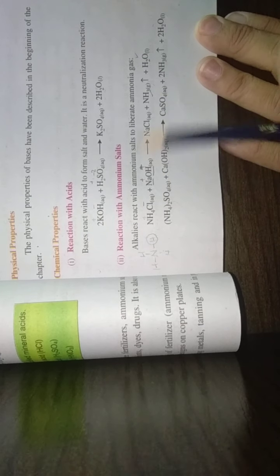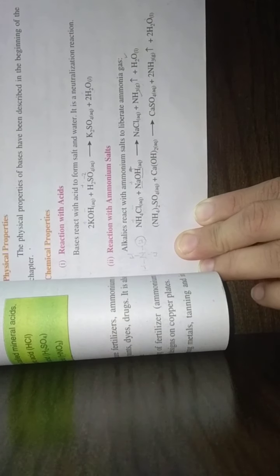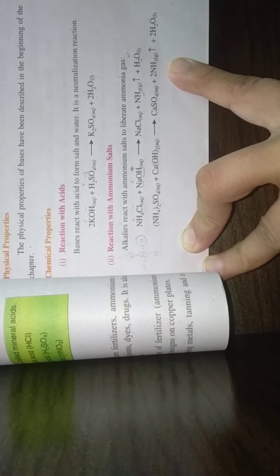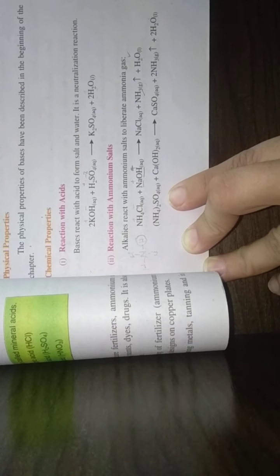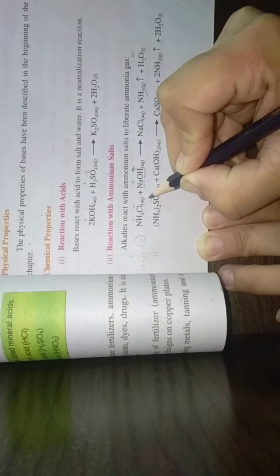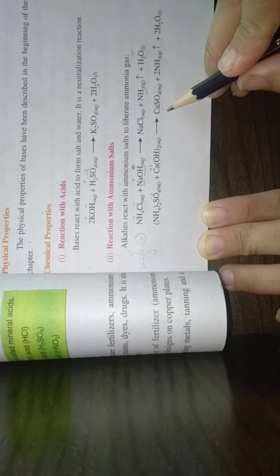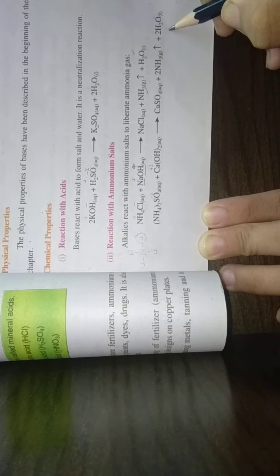Next is ammonium sulfate plus calcium hydroxide. Again the reaction is same, we have the same amount of ammonia as a gas product from here, and we have sulfate negative two, calcium plus two.